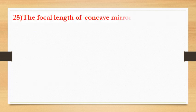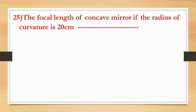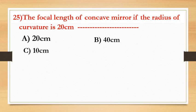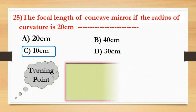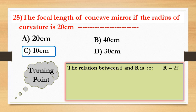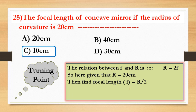Last question: find the focal length of a concave mirror if the radius of curvature is 20 cm. Options are: 20 cm, 40 cm, 10 cm, or 30 cm. The answer is 10 cm. The relation between f and R is R = 2f, so f = R/2. Given R = 20 cm, therefore f = 20/2 = 10 cm.